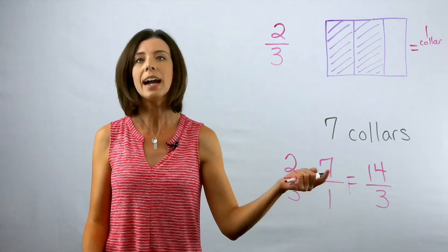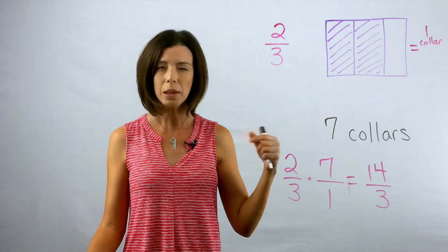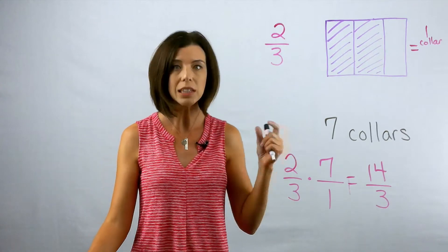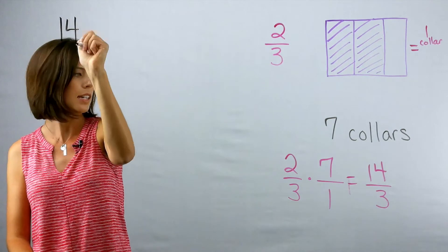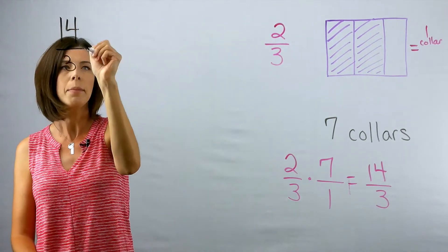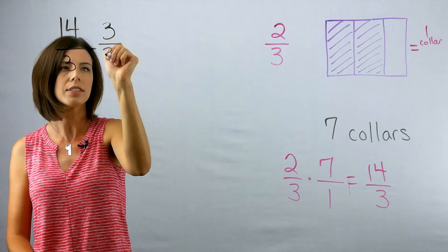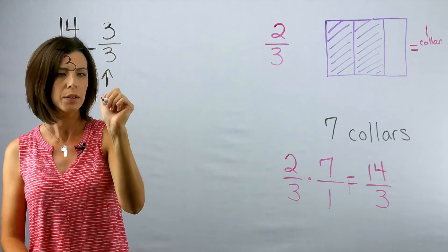Because I'm dealing in thirds, I know that three-thirds is a whole. So let me start subtracting out three-thirds to see what I'm left with. So I'm going to start with 14 thirds, and I'm going to first take out three-thirds. I know that that is one whole.